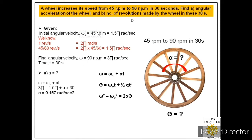Now we will find part B. In part B we have to find the number of revolutions made by the wheel in 30 seconds. We have two equations containing theta. We can use both equations since we have final angular velocity, initial angular velocity, angular acceleration, and time available.